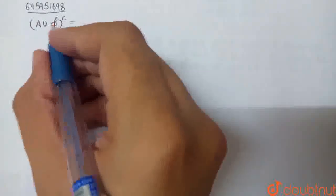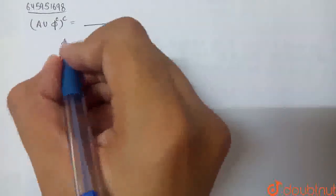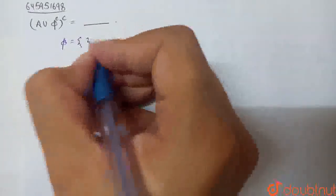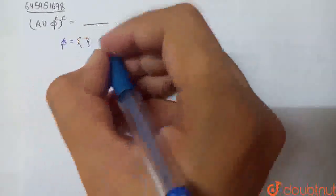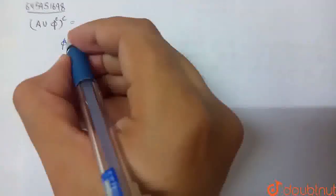So basically, what is this here? This is the complement of the empty set. Empty set means that there is nothing in this set — no elements at all. Complement means the opposite.